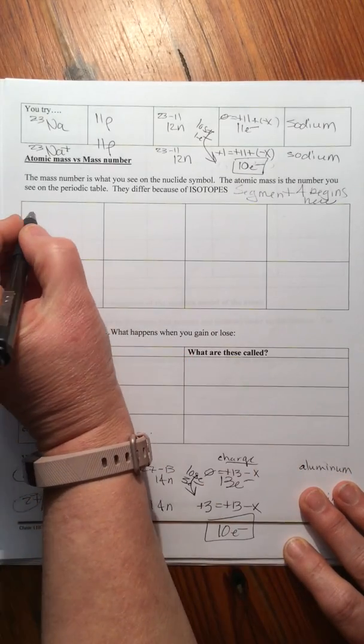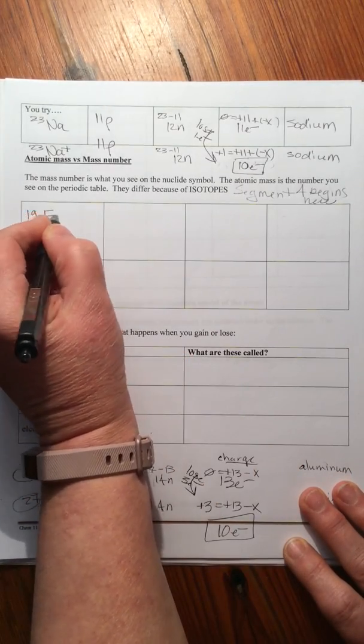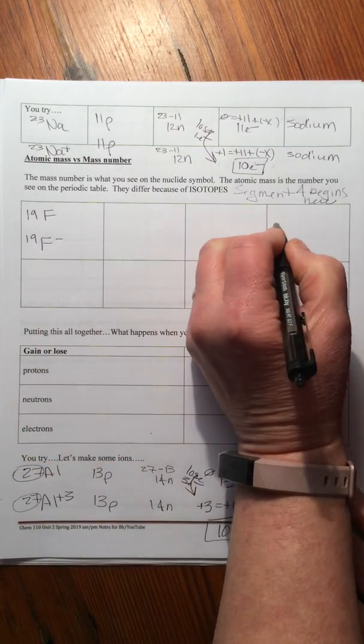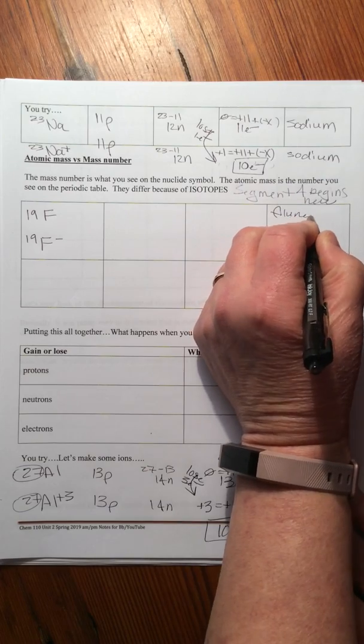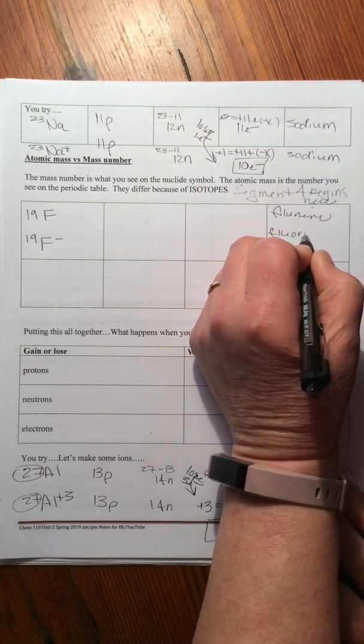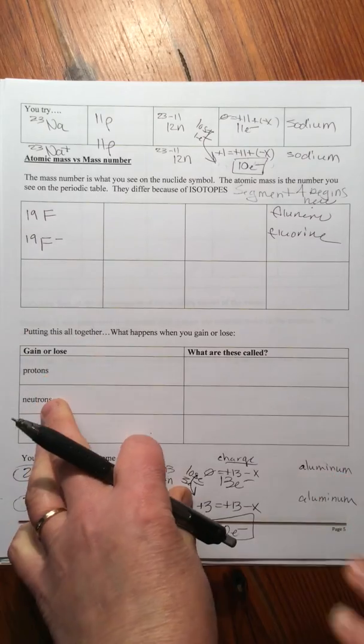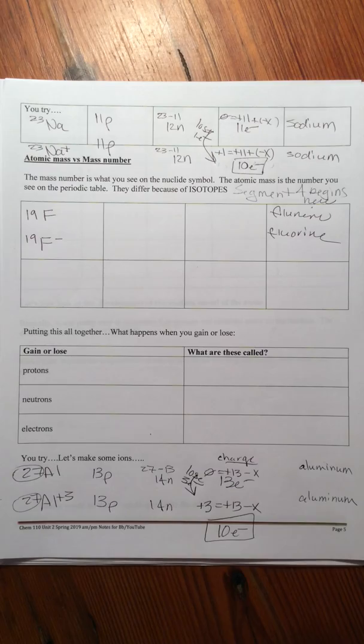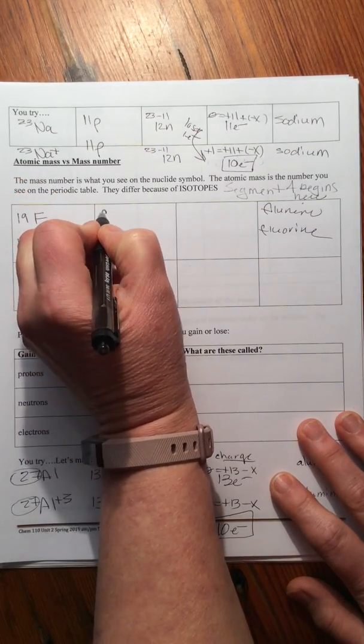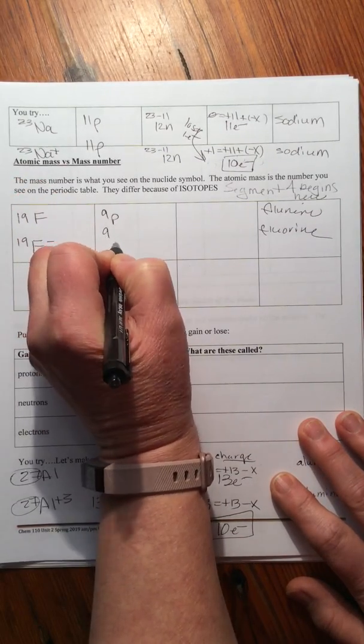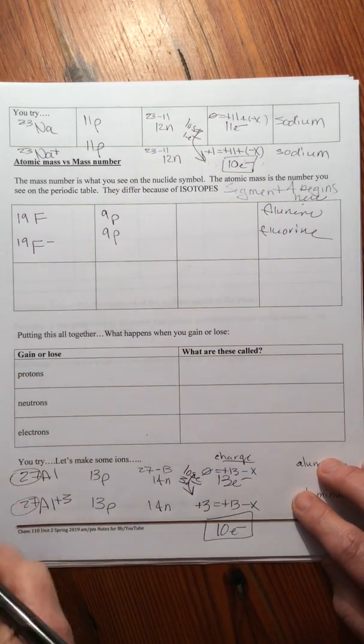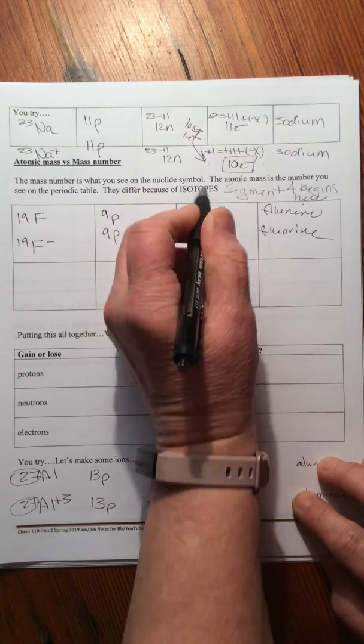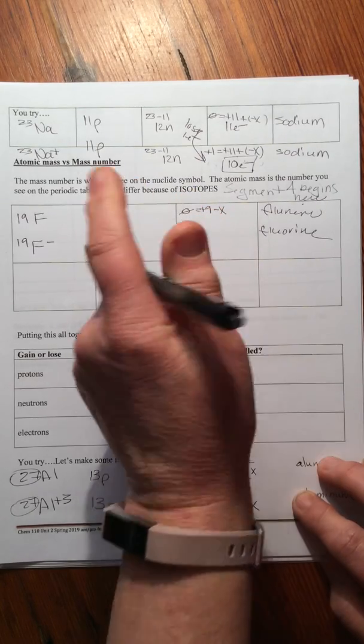Let's say we go to 19F or 19F minus. Fluorine. They both have F. Nine protons, nine protons. No charge. Nine pluses, how many minuses do I need to equal zero?